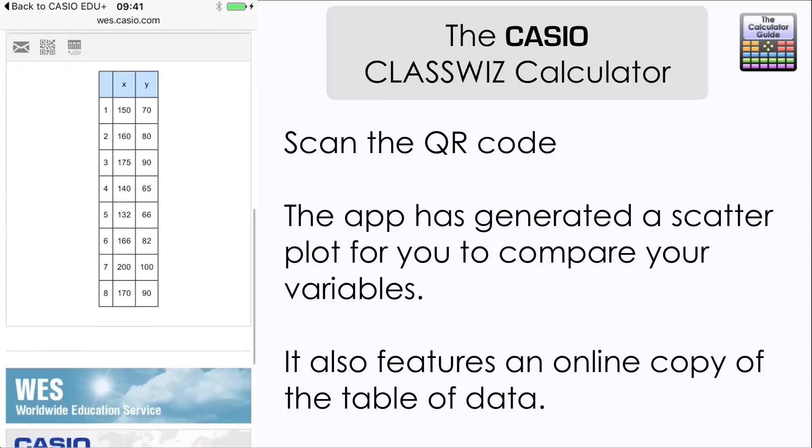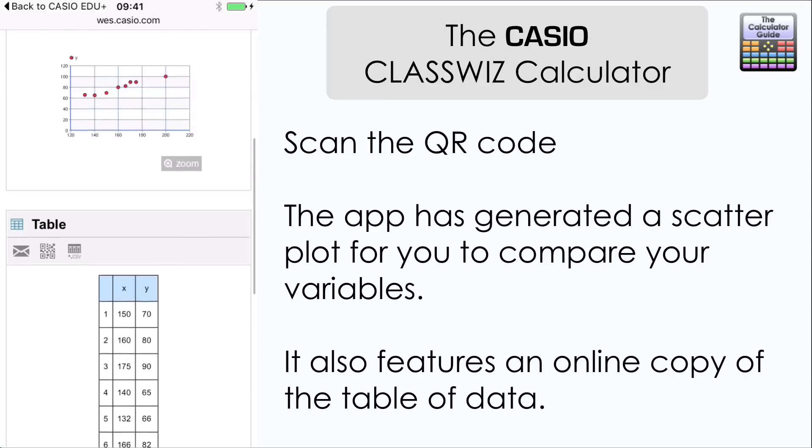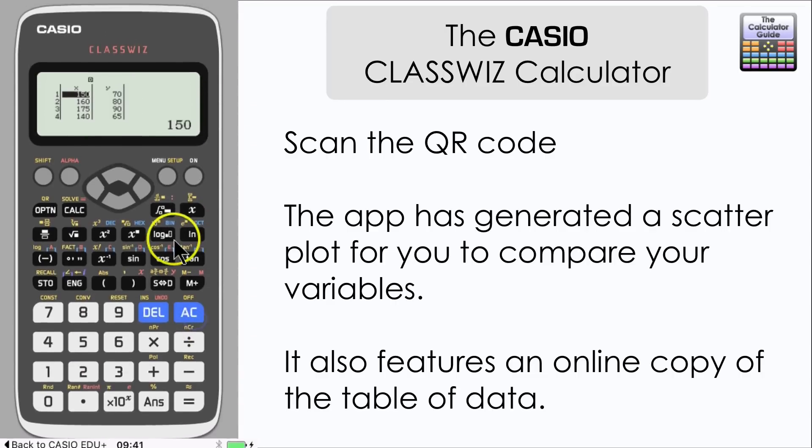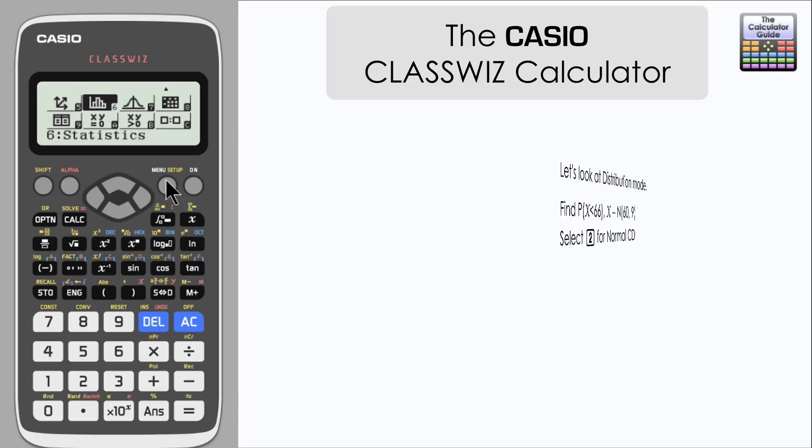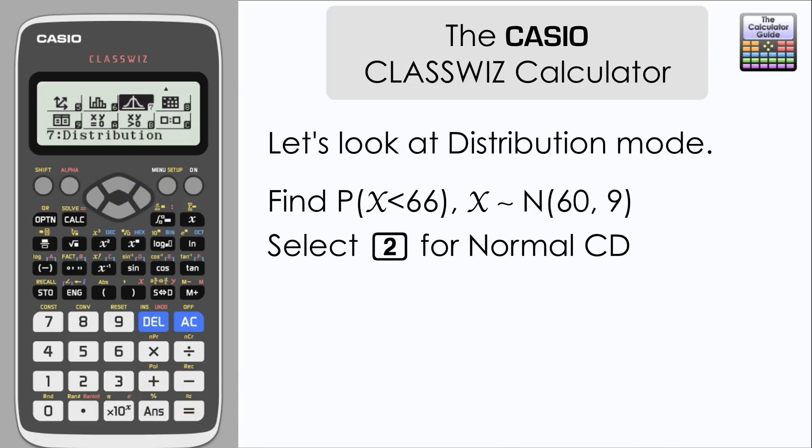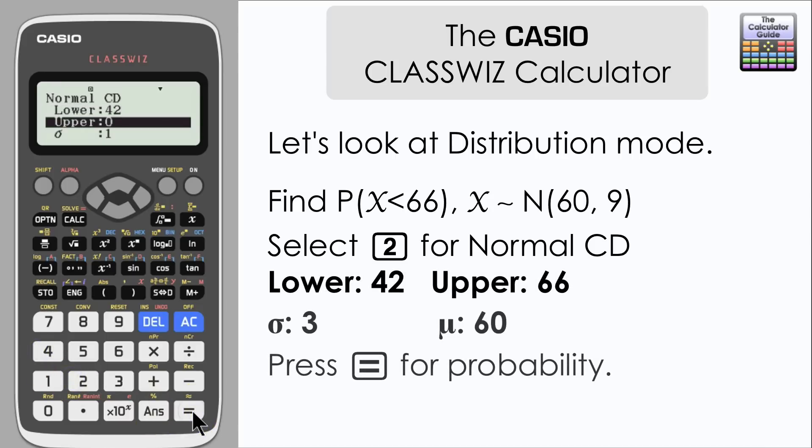Let's just have a look at this feature one more time. This time I'm going to go back into the distribution mode. And I'm going to try and answer this question. Find the probability that X is less than 66. And it's given that X is normally distributed with a mean of 60. And with a variance of 9. Well I'm going to select 2 for normal cumulative distribution. I'll select a lower value of 42. I'm trying to keep it more than 4 standard deviations away from the mean. This is 6 standard deviations. You can go as low as you possibly want. But I'm going to stick with 42. Upper value is 66 because we want less than 66.